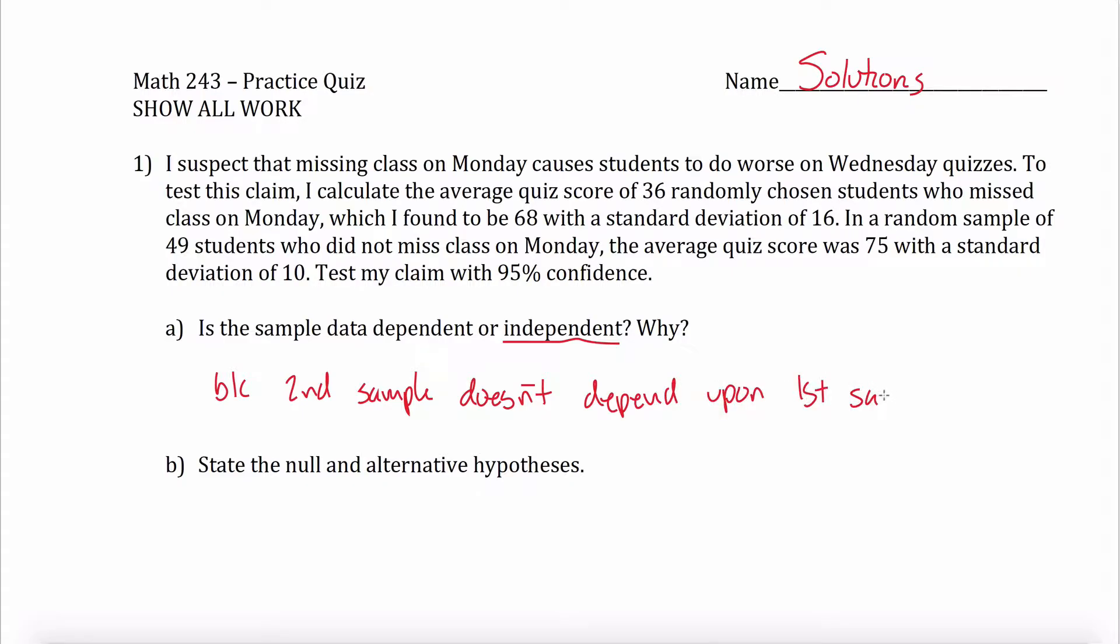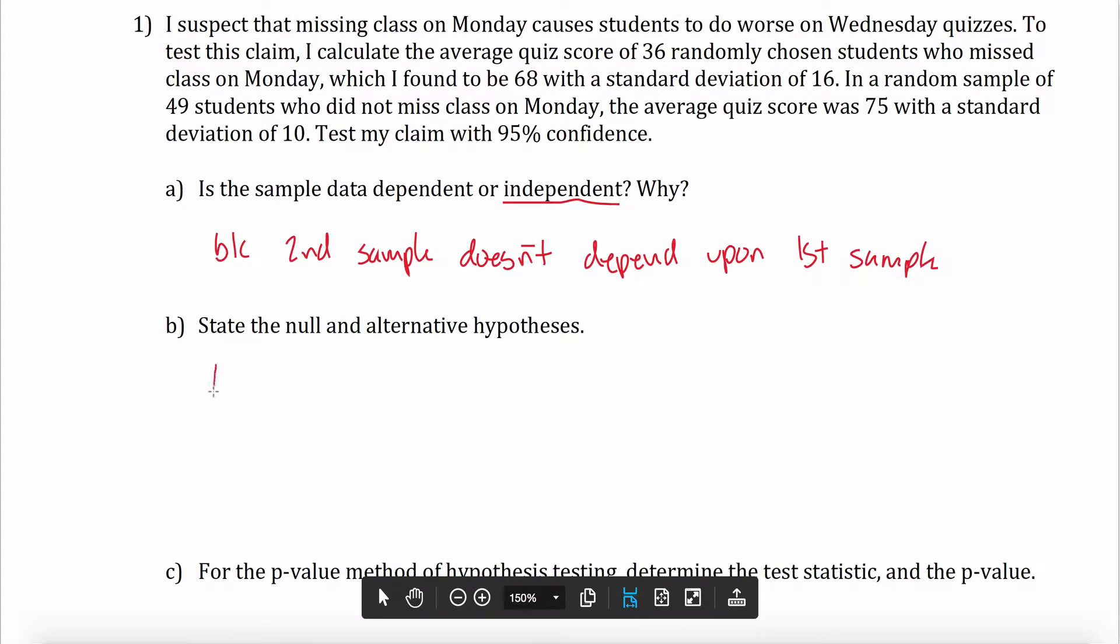My null and alternative hypotheses are going to compare two different mu's. My null hypothesis will compare the mu of the students who missed class with the mu of the students who did not miss class. Maybe M and C. And the alternative hypothesis is my claim. And I claim that the students who missed class do worse than, hence the less than sign here, the students who went to class.